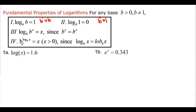Property 4 states b raised to the log same base of x equals x. This is the opposite idea of property 3 — property 3 deals with a log, and property 4 deals with an exponential.